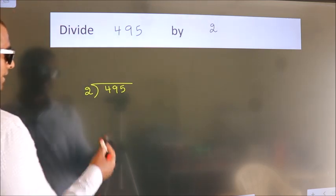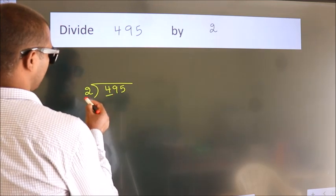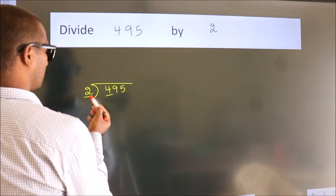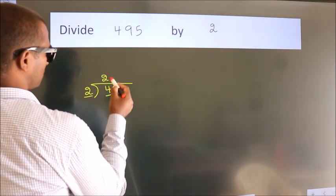Next. Here we have 4, here 2. When do we get 4? In 2 table. 2 times 2 is 4.